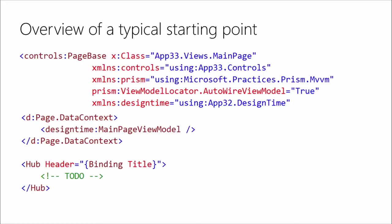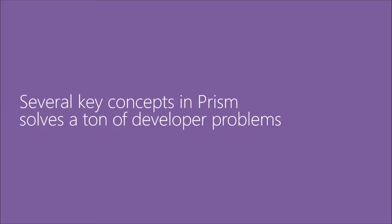This really is the base implementation — what a view looks like when you're using Prism. You don't have to have design time data, and you don't have to auto-wire your view model. Several key concepts in Prism solve a ton of developer problems. Wait till you see what it actually does — it's just feature after feature, solving problem after problem. Let's begin with the navigation service.